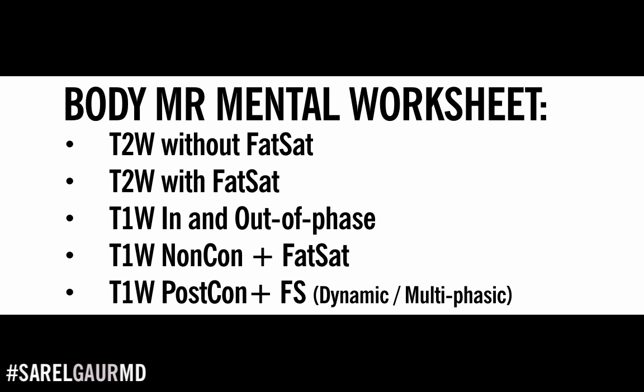So there you go — we went through all the major sequences in a body MRI. There's T2 weighted images, T2 weighted with fat saturation, T1 weighted in-phase and out-of-phase for intravoxel fat or metal, T1 weighted non-contrast fat-saturated imaging for intrinsically T1-bright structures, and post-contrast multiphasic T1 weighted images to characterize focal liver lesions or other solid organ lesions at multiple time points. I hope that was helpful. Thanks for watching — please comment below, like it, subscribe, and tell me what you think. Take care.